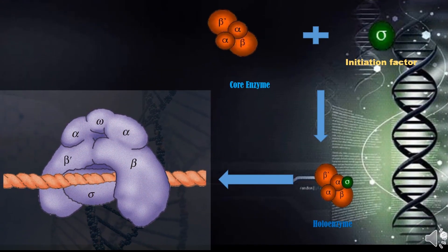This picture represents the core enzyme as well as the holoenzyme. The core enzyme consists of alpha-2, beta, beta-dash, and omega. When the initiation factor sigma binds to the core enzyme, it forms the holoenzyme. The holoenzyme is the functional form of RNA polymerase and it binds to the promoter site in DNA, where transcription initiation occurs. The identification of the promoter occurs with the help of the sigma factor.